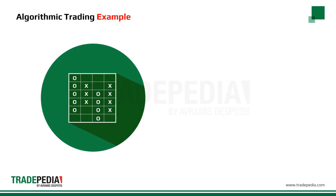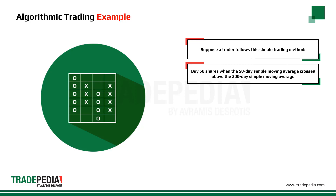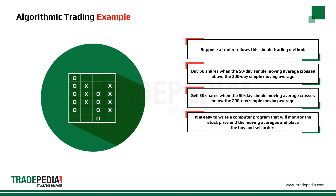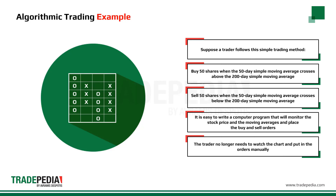To showcase a simple example, let us suppose a trader follows this simple trading method: buy 50 shares when the 50-day simple moving average crosses above the 200-day simple moving average, and sell 50 shares when the 50-day simple moving average crosses below the 200-day simple moving average. Using these two simple conditions, it is easy to write a computer program that will automatically monitor the stock price and the two moving averages, and accordingly place the buy and sell orders when the defined conditions are met. The trader no longer needs to watch the chart and put in orders manually — the algorithmic trading system automatically does it by correctly identifying the trading opportunities the moment they occur.